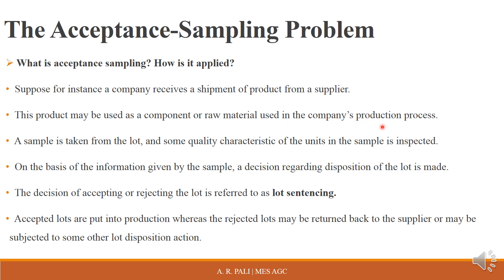Now a sample is taken from the lot, and some quality characteristic of the units in the sample is inspected. The shipment has been received by the company, and this product — whether a component or raw material — is used by the company in its production process.